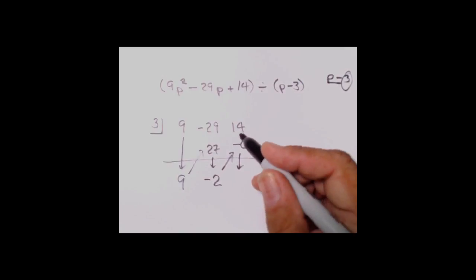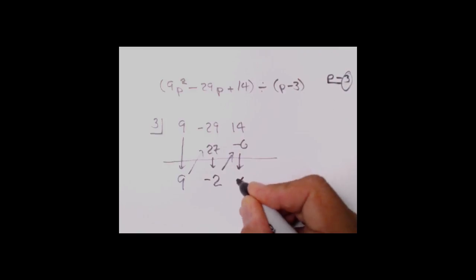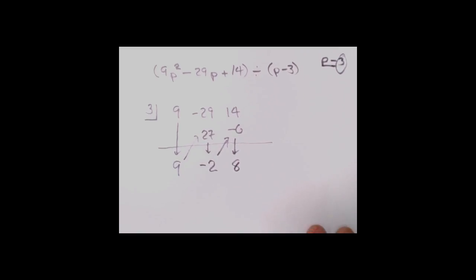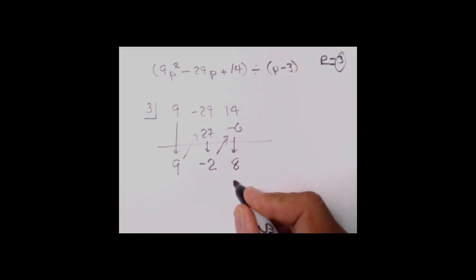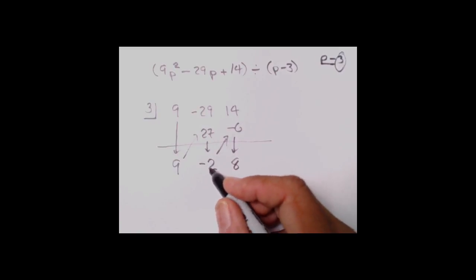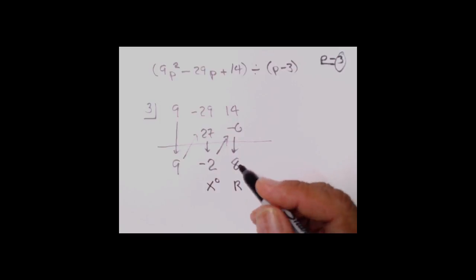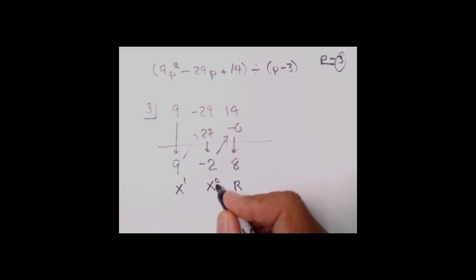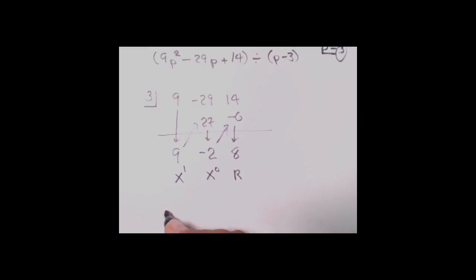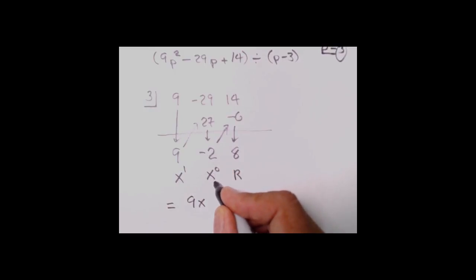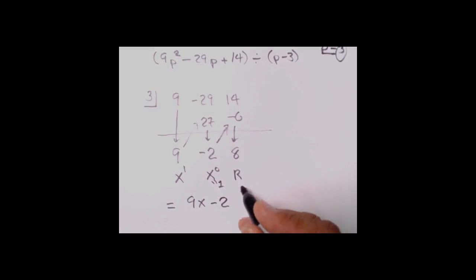14 minus 6 leaves me with a positive 8. Now remember we put the answer together: the first guy on the right is always the remainder. The second guy is the plain number — x to the zero equals 1. Then x to the first. So our answer is 9x minus 2, and remember x to the zero equals 1, so minus 2 times 1 is minus 2. But we've got a remainder and it's positive: r plus 8.